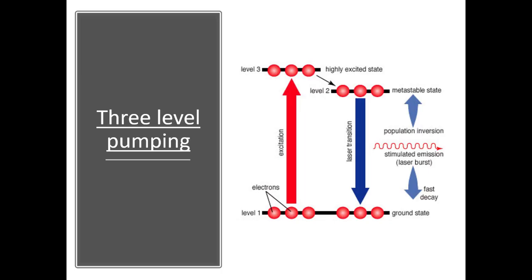In the 3-level pumping scheme, one metastable state is involved along with the ground state and one excited state of the atom. Electrons in the ground state are first excited to the high energy level, then they come to the metastable state, creating a population inversion between the metastable state and the ground state. Laser is produced by the transition of electrons from the metastable state to the ground state.